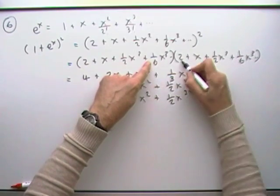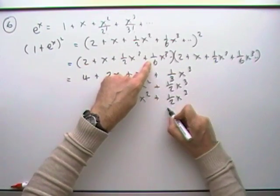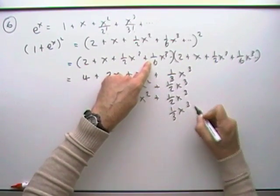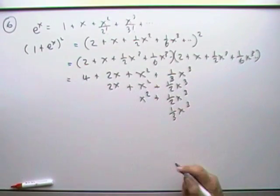Move on to the cube now. That's going to give me 2 times the 6 is a third of x cubed. And that's it finished. Those are all the only terms I'll have up to the power of 3.